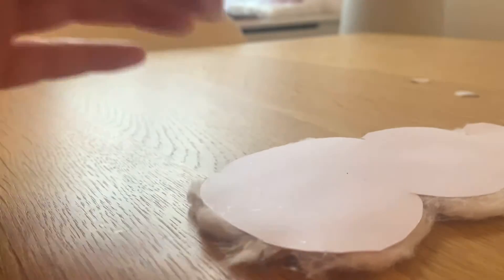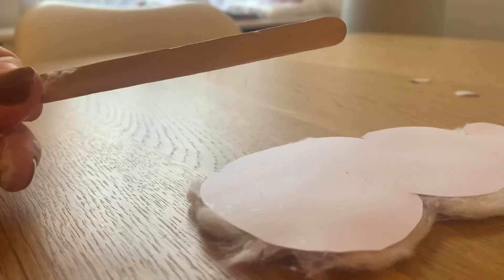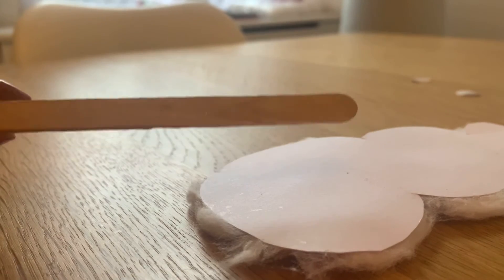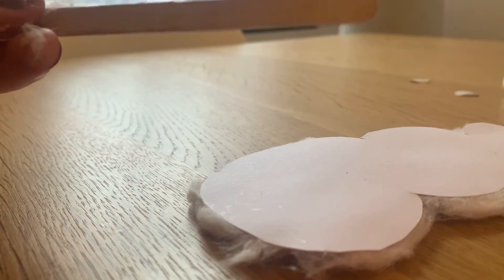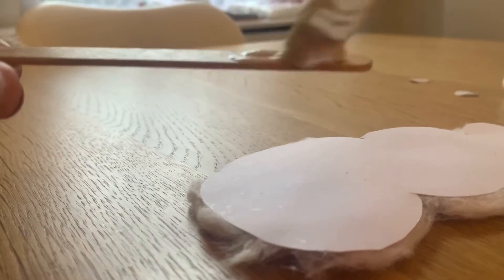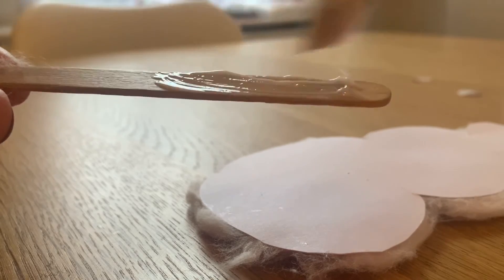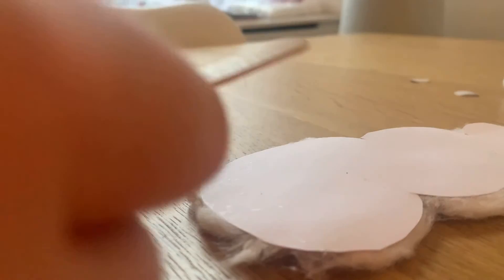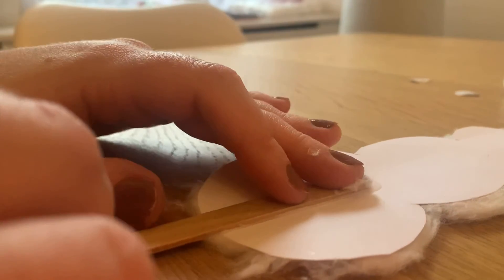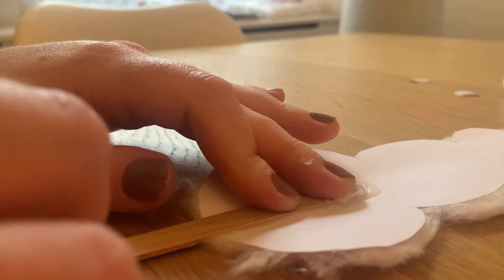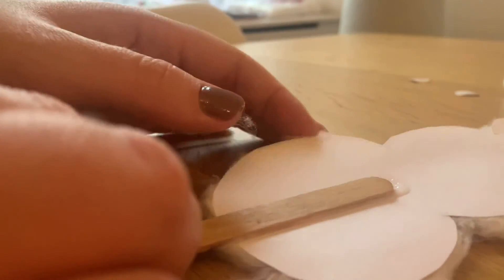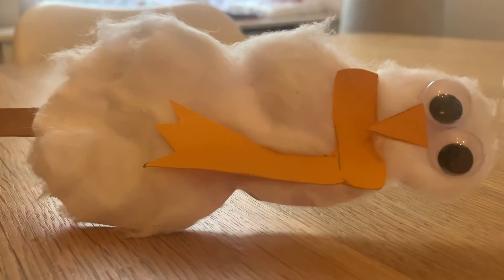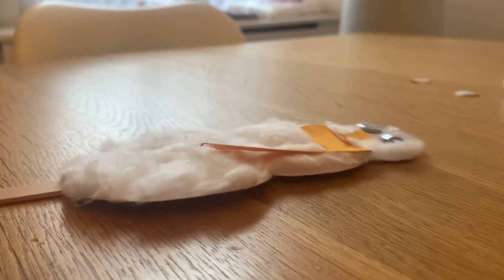Once your snow person is dry, turn it over and get your lolly stick and slather the top half of your lolly stick with PVA glue. And then you're going to lay it gently on the back of your snow person, just like this, so you've got a little bit hanging off the edge that you can hold. And that may take a little while to dry, so just put it to one side and let it dry. And it should look something like this.